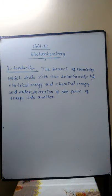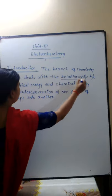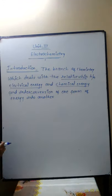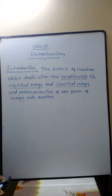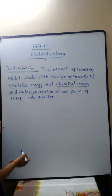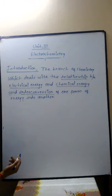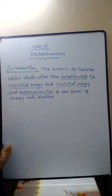Jai Hind students! Today we start our third unit: electrochemistry. Electrochemistry is the branch of chemistry in which we deal with the relationship between electrical energy and chemical energy. We study how electrical energy converts into chemical energy and chemical energy converts into electrical energy. This direct interconversion of one form of energy into another is known as electrochemistry.